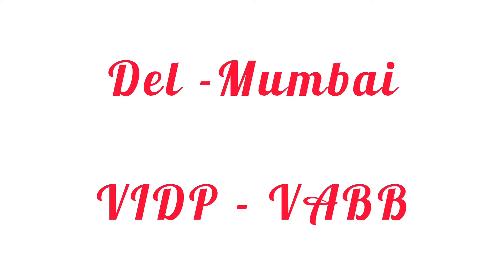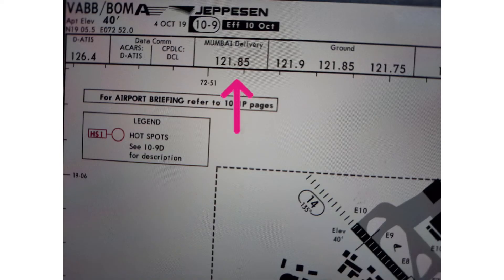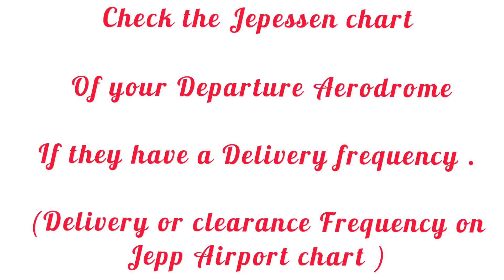We start with RT at Delhi for our Delhi to Mumbai route, wherein we have a clearance or delivery frequency. You can find this frequency at the Jeppesen airport chart. You may also see the Mumbai chart and its delivery frequency. Let's consider our flight number as Wingsdom 123.